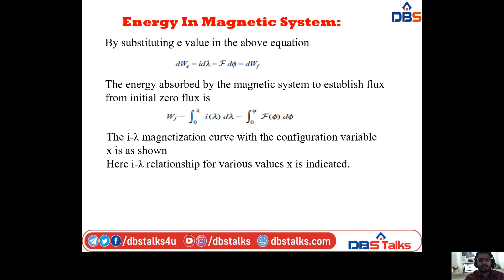The energy absorbed by the magnetic field to establish flux from initial zero flux is: Wf = ∫₀^λ I(λ) dλ = ∫₀^φ F(φ) dφ. The energy absorbed by the magnetic system to establish flux from initial zero flux is Wf = ∫₀^φ F(φ) dφ.